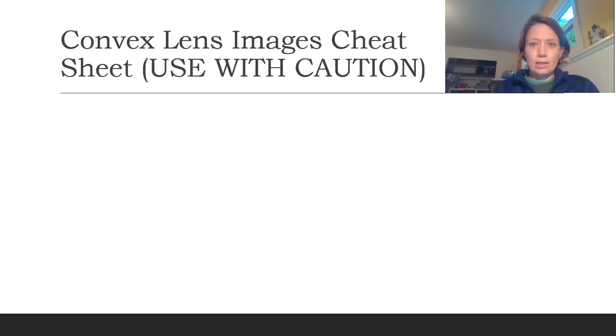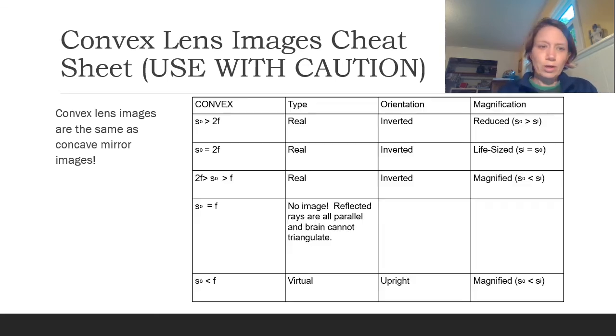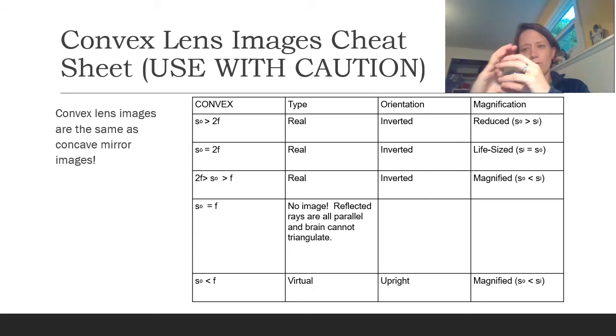In fact, this is that cheat sheet that you can use to check your answers once you're done with your ray tracing. It's exactly the same as a convex or a concave mirror one. They're the two converging devices, the concave mirror that focuses all the light or the convex lens that focuses the light on the opposite side. The result is exactly the same, although the image ends up being on opposite sides of the device.